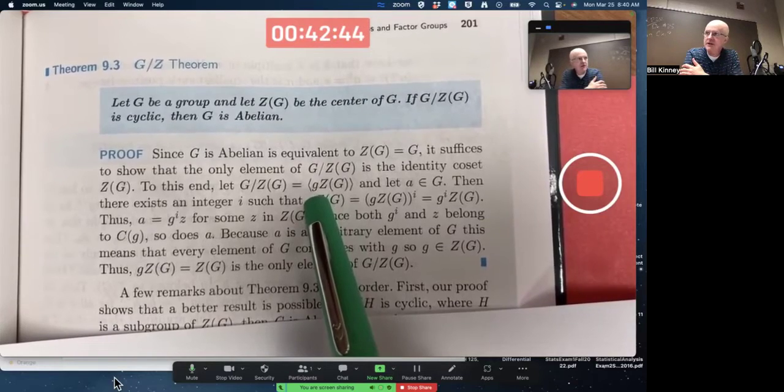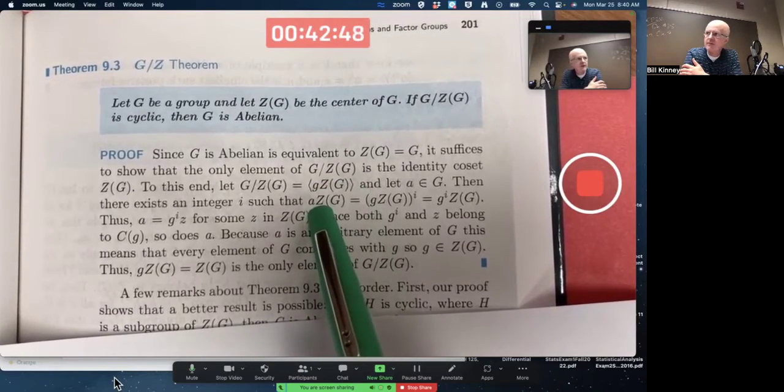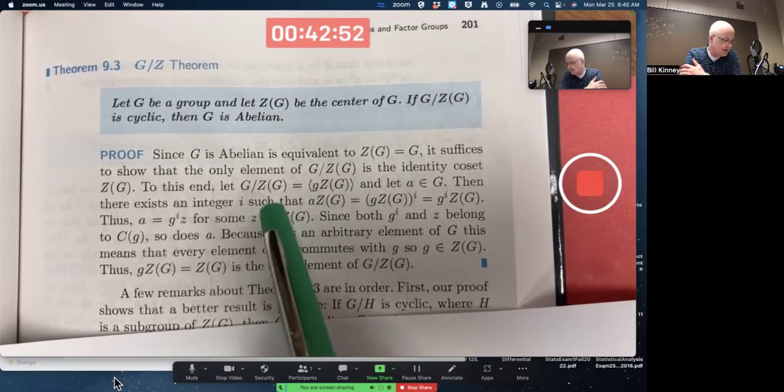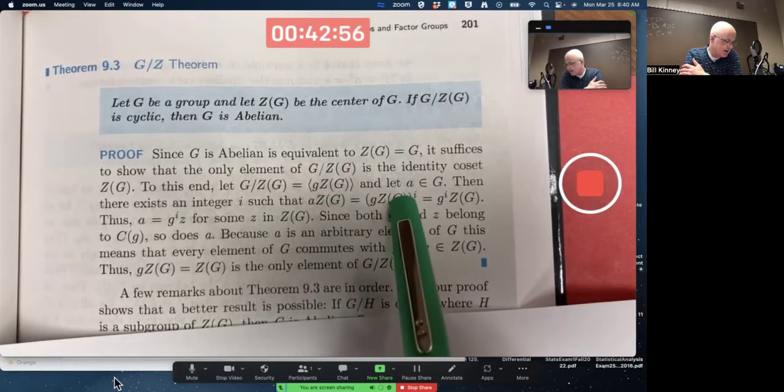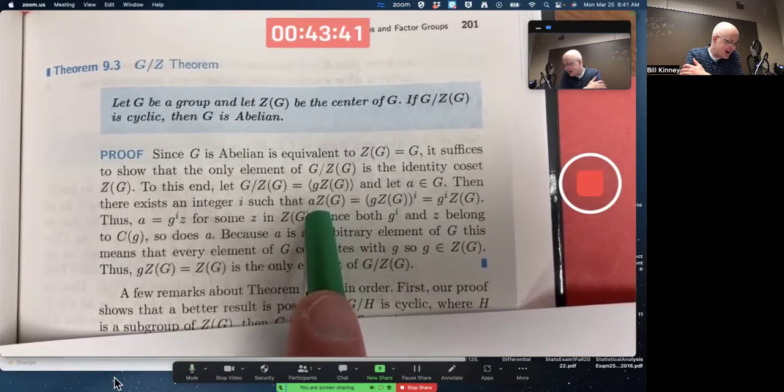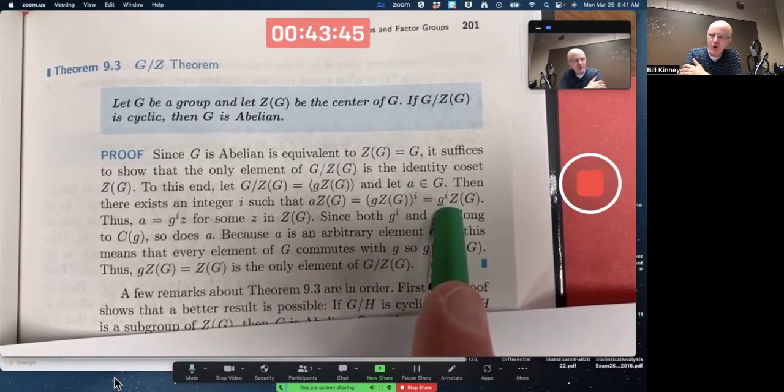Little g is an element of capital G. This is a left coset, and we've got the cyclic group notation around it. We're assuming it generates this factor group. So suppose that's a generator. Let A be an element of G. We know there exists an integer i where this is true. Why? Always ask yourself why.